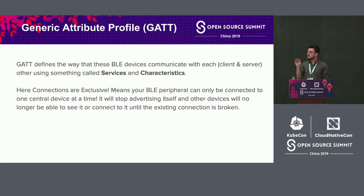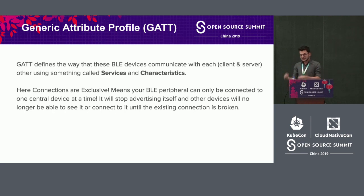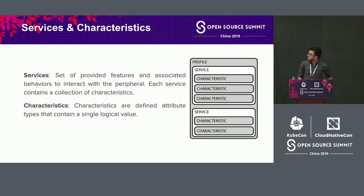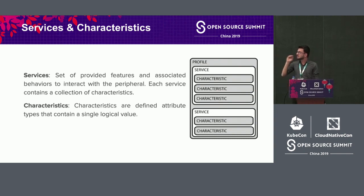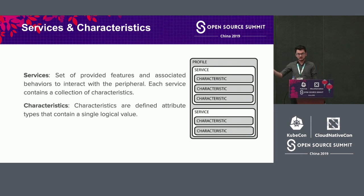Connections in BLE are exclusive — when the client, meaning a BLE device, is connected to one central server, it stops advertising itself, so no other device can connect until the connection is broken. In BLE we have something called a profile, which is just a collection of services and characteristics. Service defines a set of features associated with behaviors to interact with the peripheral. Each service has a collection of characteristics, which are defined attribute types containing a single logical value. For example, in a fitness tracker, a service could be 'Device Information' with characteristics like software revision number, hardware revision number, and device name.